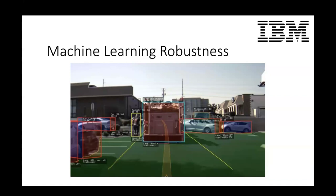An example of this: the most classical example is you train your model on the training set, and on the testing set you see a scenario of degradation. Robustness is really important, and there are so many different aspects to it.